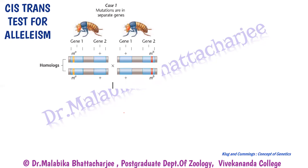Now let's look into case one. Assume that there are two mutations, MA and MB. In case one, the mutations are not alleles of the same gene. So MA is a mutation for gene one and MB is a mutation for gene two.